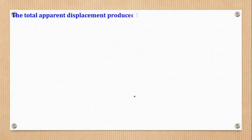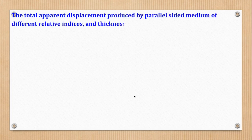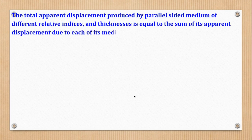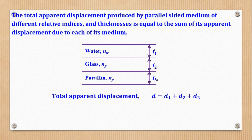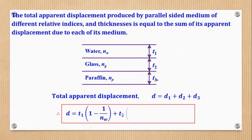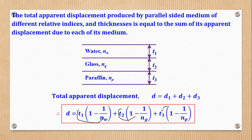For more than one parallel medium, we sum up all the displacements just as we did for apparent depth. With water of real depth T1, glass of real depth T2, and paraffin of real depth T3, total apparent displacement = T1(1 − 1/N1) + T2(1 − 1/N2) + T3(1 − 1/N3), giving displacement contributions due to each medium.